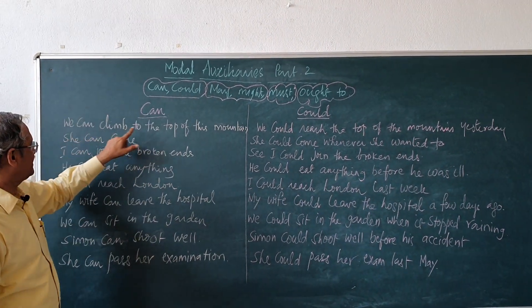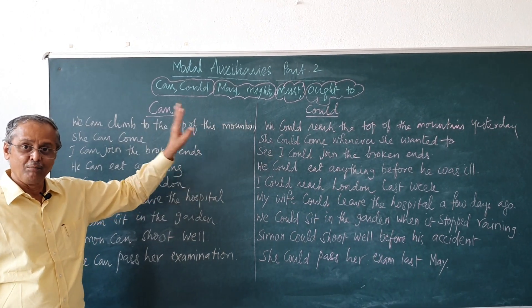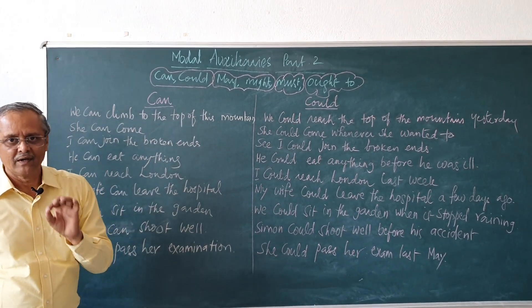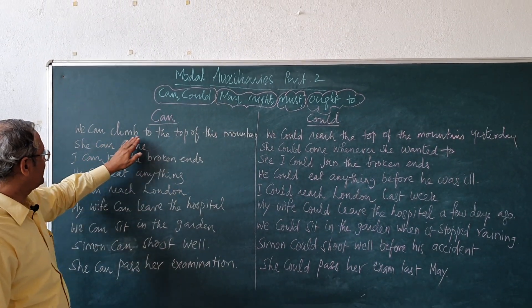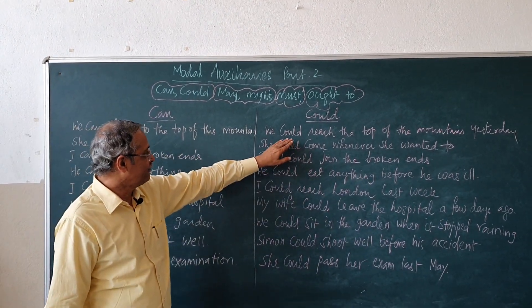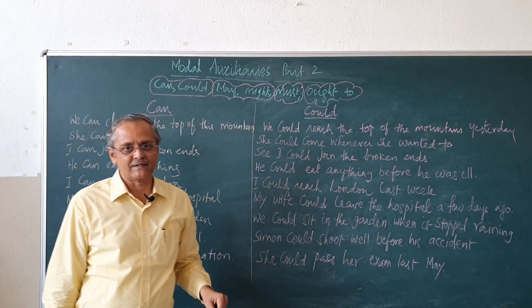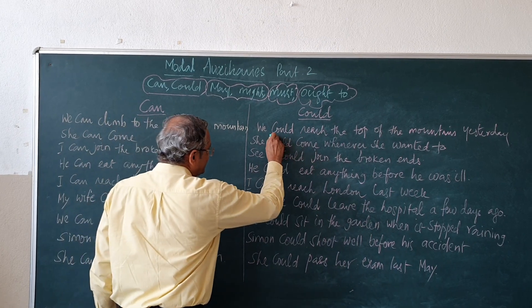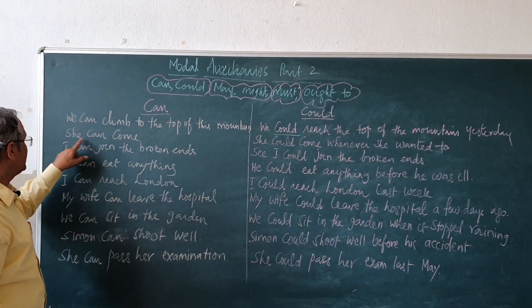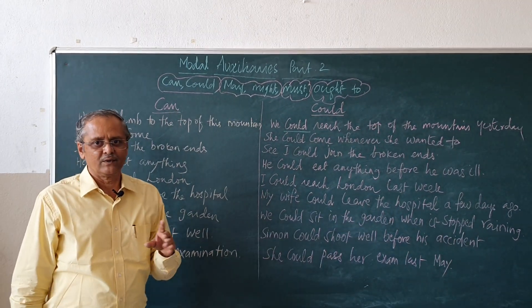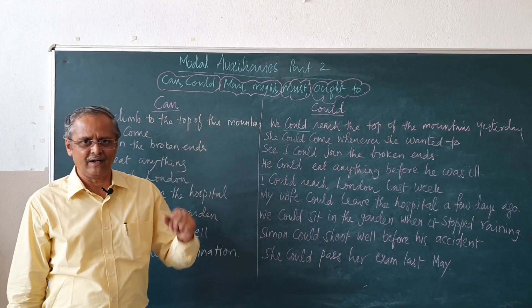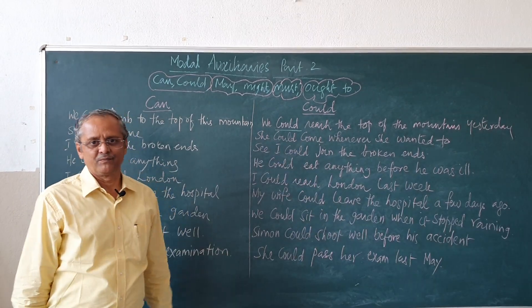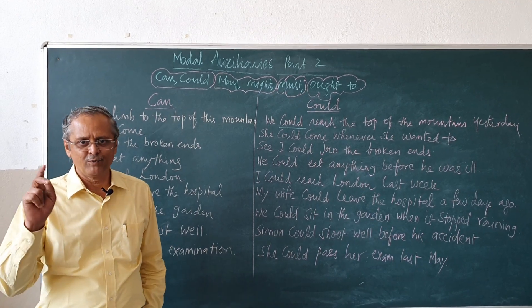Observe these sentences. 'We can climb to the top of the mountain' — this expresses ability. 'We could reach the top of the mountain yesterday' — here 'can' becomes 'could' in past tense. 'She can come' — this can be possibility or permission. 'She could come whenever she wanted to' — that is also permission; a blanket permission has been given to her, whenever she wanted she could come.